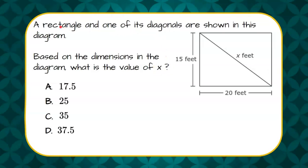So we are told that this is a rectangle. When you are given a rectangle, we know that they have four right angles. So we know that this is a 90 degree angle and that forms a right triangle.